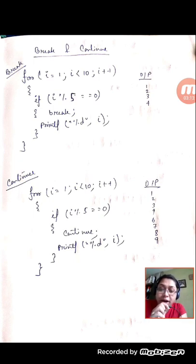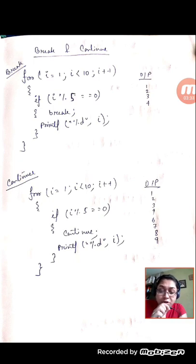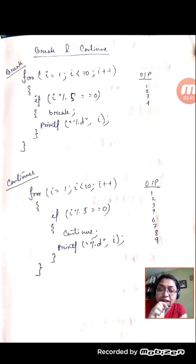This is the basic difference between break and continue. When the condition is met for break, it breaks the loop entirely and never gets back to the for loop. But in case of continue, it only skips that particular iteration, and for the next iteration it gets back to the for loop to execute the rest. That is the concept of break and continue.